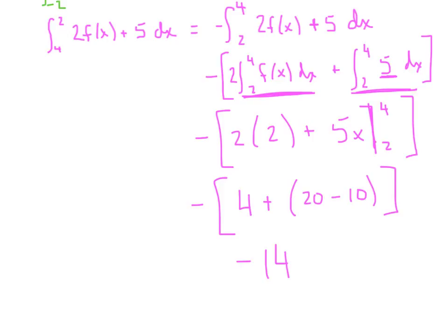A lot of action going on there. We had to switch the bounds so we negated, then used properties to pull the 2 out front, and wrote it as the sum of two separate integrals rather than one big one. That's a technique I want to see you use — break it into smaller, more manageable pieces. Hopefully we're solid tonight. Let's put it all together tomorrow and really focus on being excellent, taking it to a very high level, and dominating this topic.